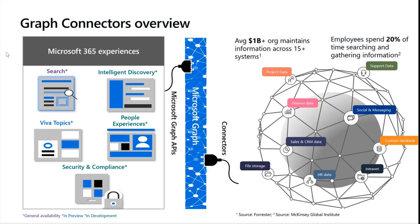Let me give you a quick snapshot overview of what we shared earlier this month at Ignite. As most of you already know, Graph Connectors is GA — it helps you bring in your third-party content into the Microsoft Search ecosystem and helps you bring content into not just search,